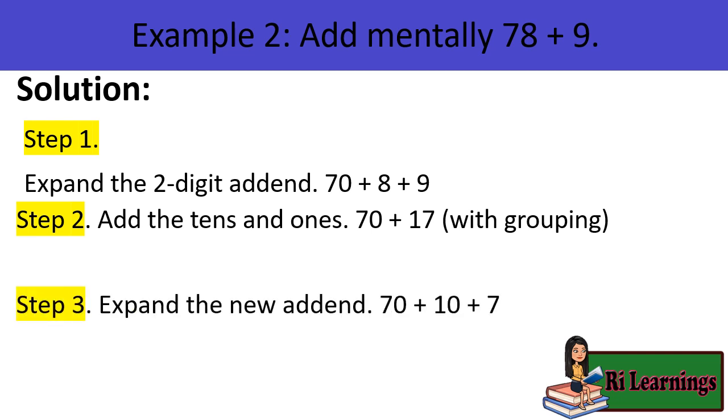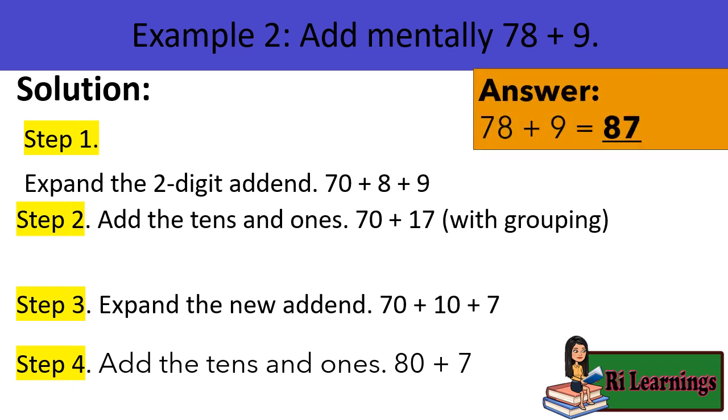Step 4, add the tens and ones. 70 plus 10 equals 80, 80 plus 7 equals 87. 78 plus 9 equals 87.